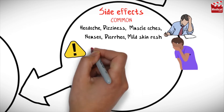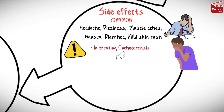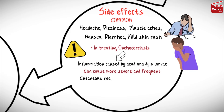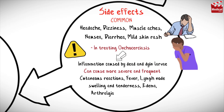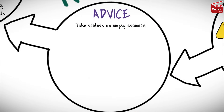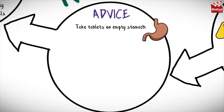In treating onchocerciasis, inflammation caused by dead and dying larvae can cause more severe and frequent reactions: fever, lymph node swelling and tenderness, edema, arthralgia, and ocular irritation. The severity of this reaction is related to parasite load, so antihistamines or steroids may be given to ameliorate the symptoms.